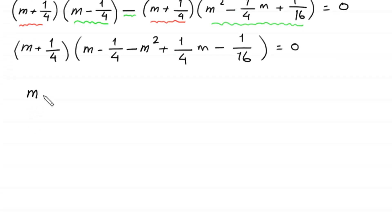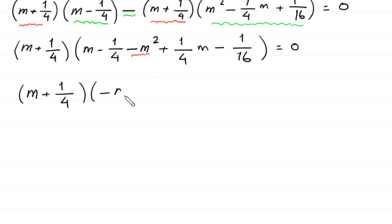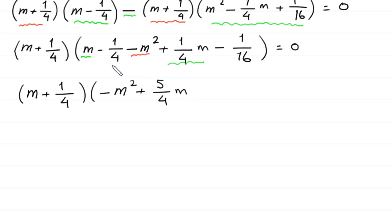Next, m plus 1 over 4 times — now we write this negative m squared first — negative m squared, and this m plus 1 over 4 m becomes plus 5 over 4 m. This negative 1 over 4 minus this 1 over 16 becomes minus 5 over 16, is equal to 0.